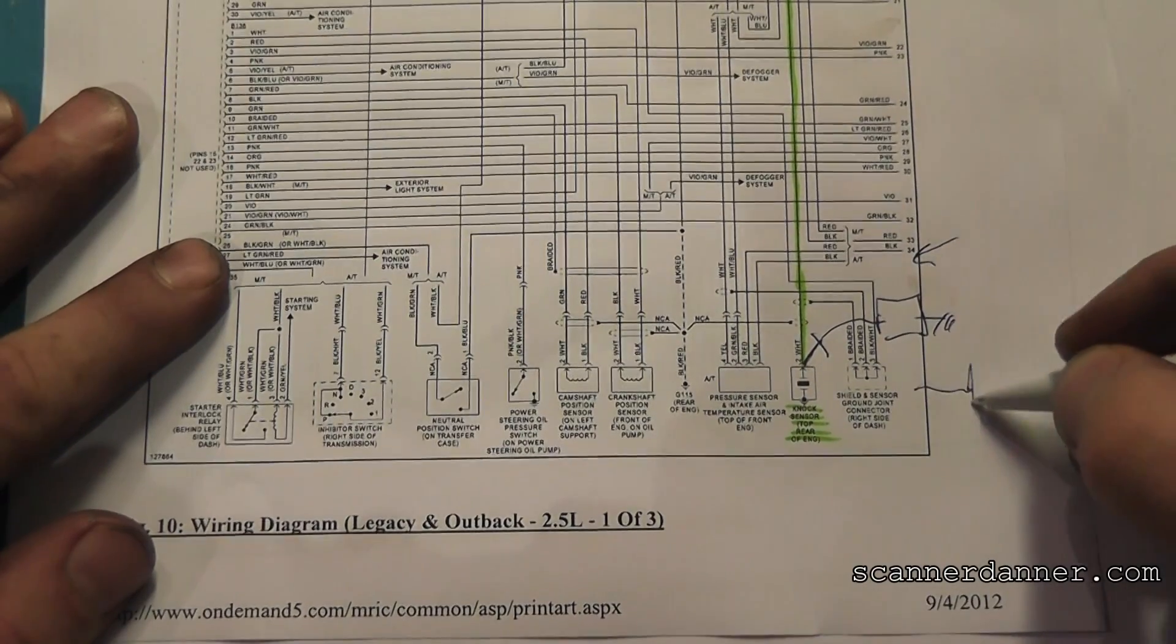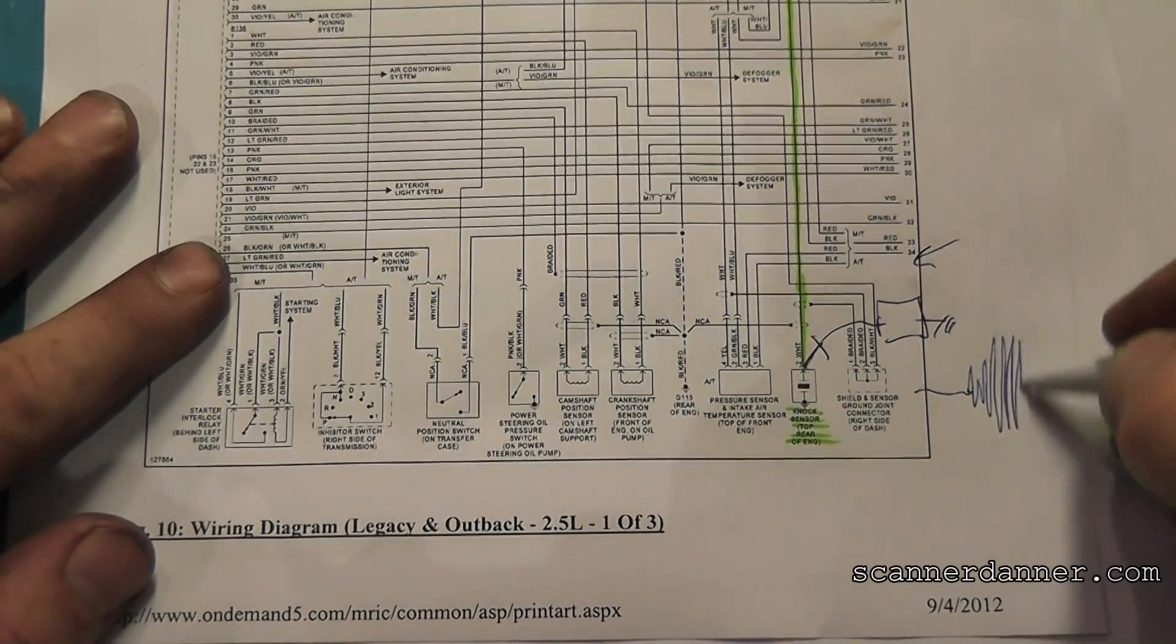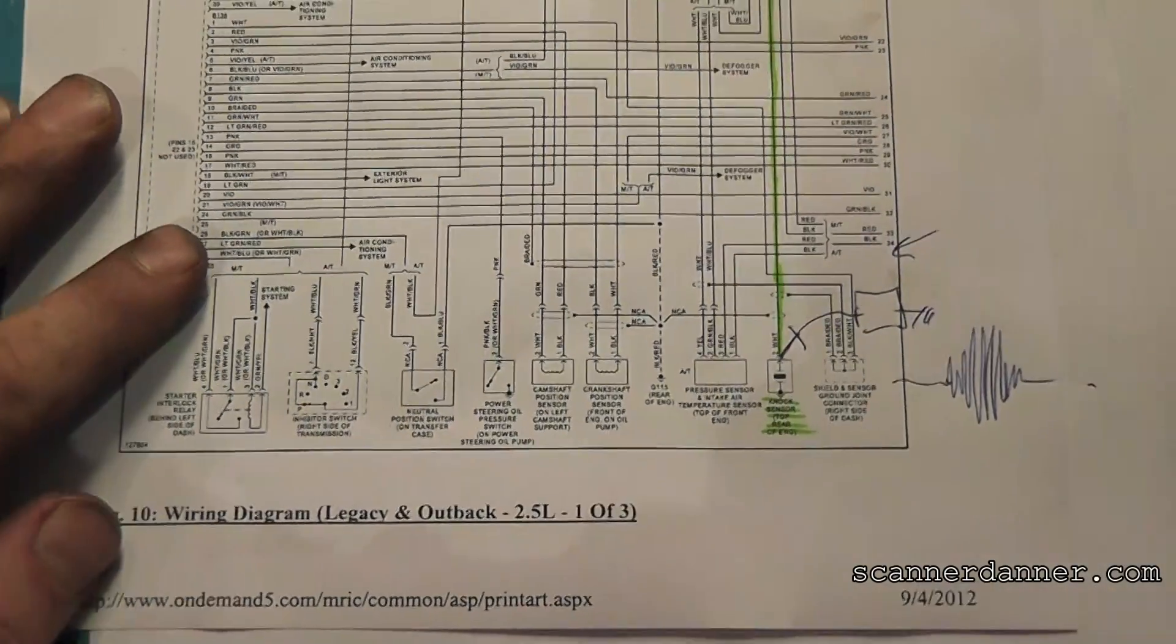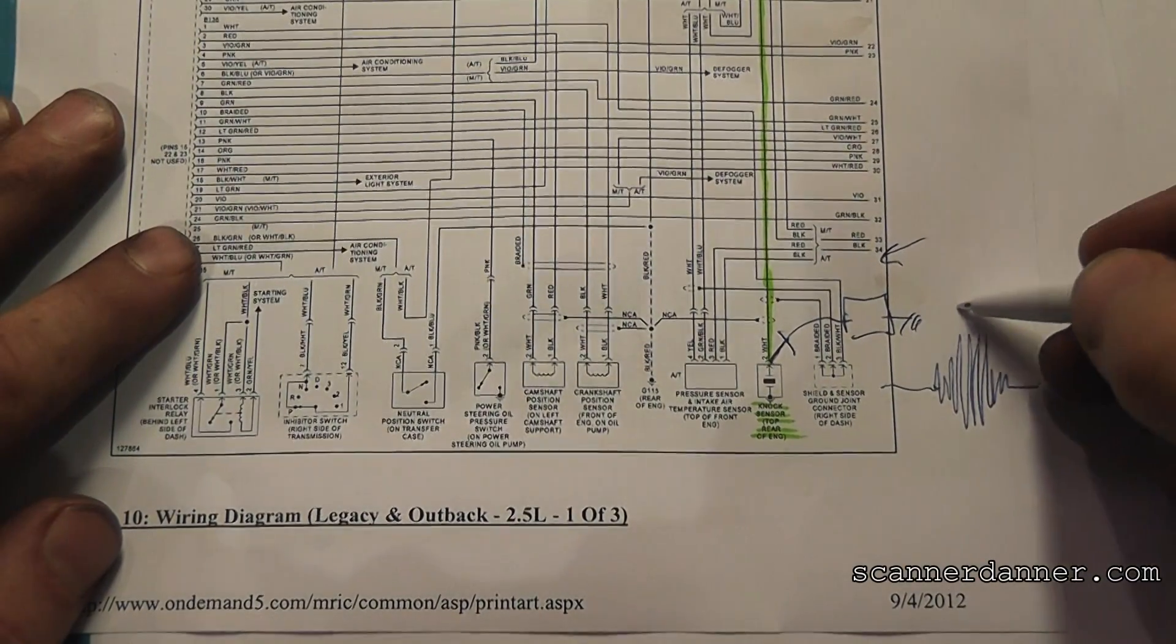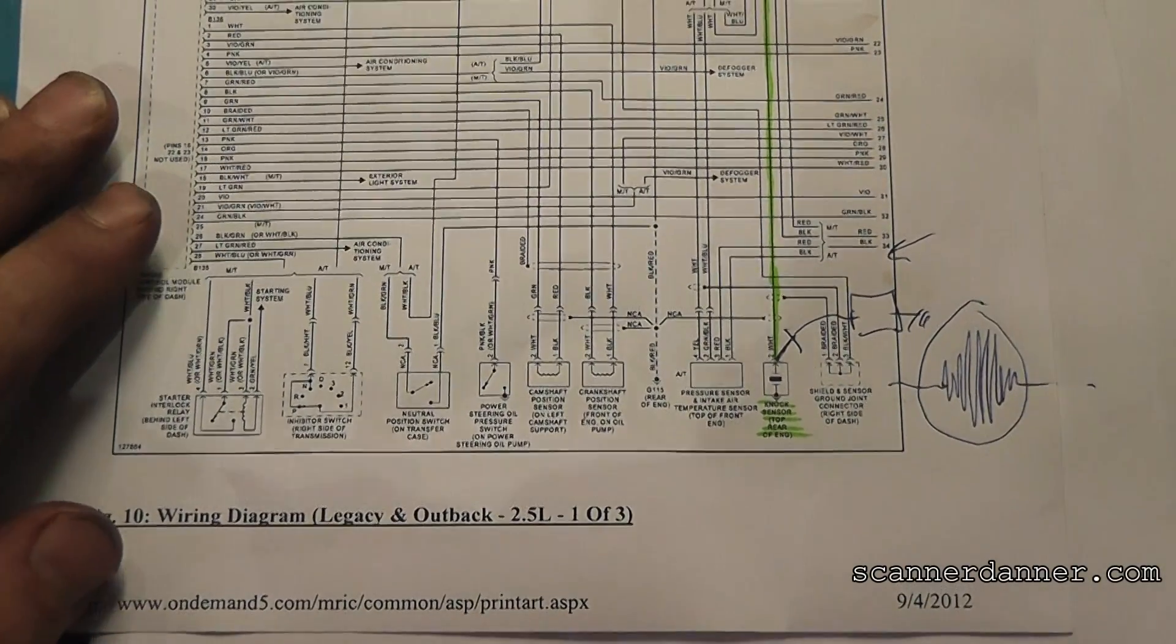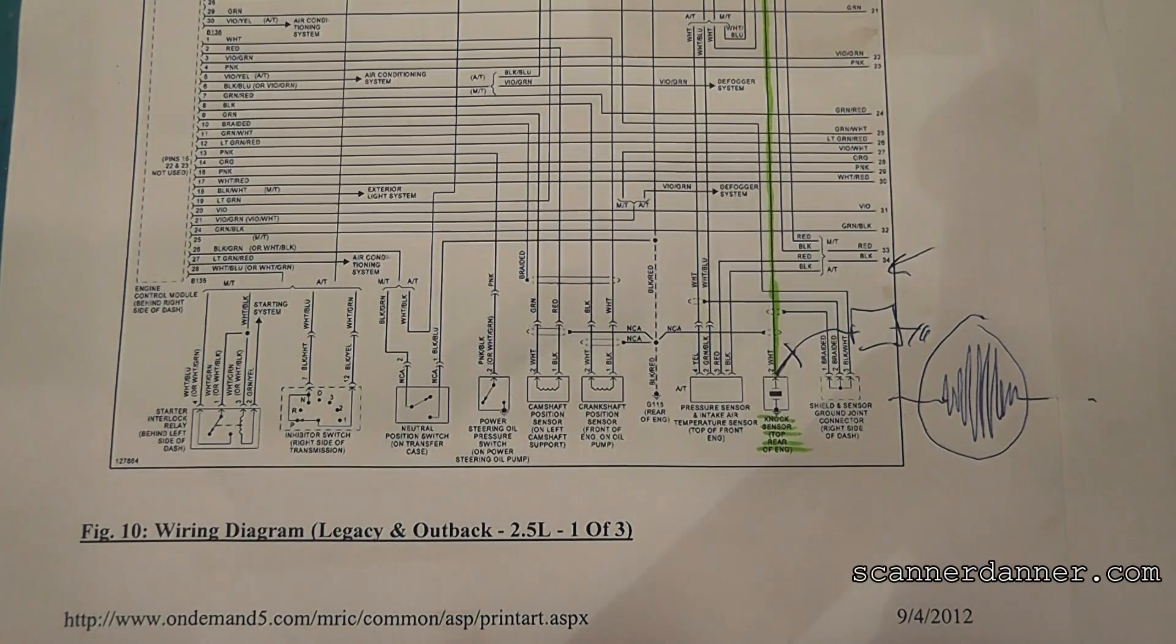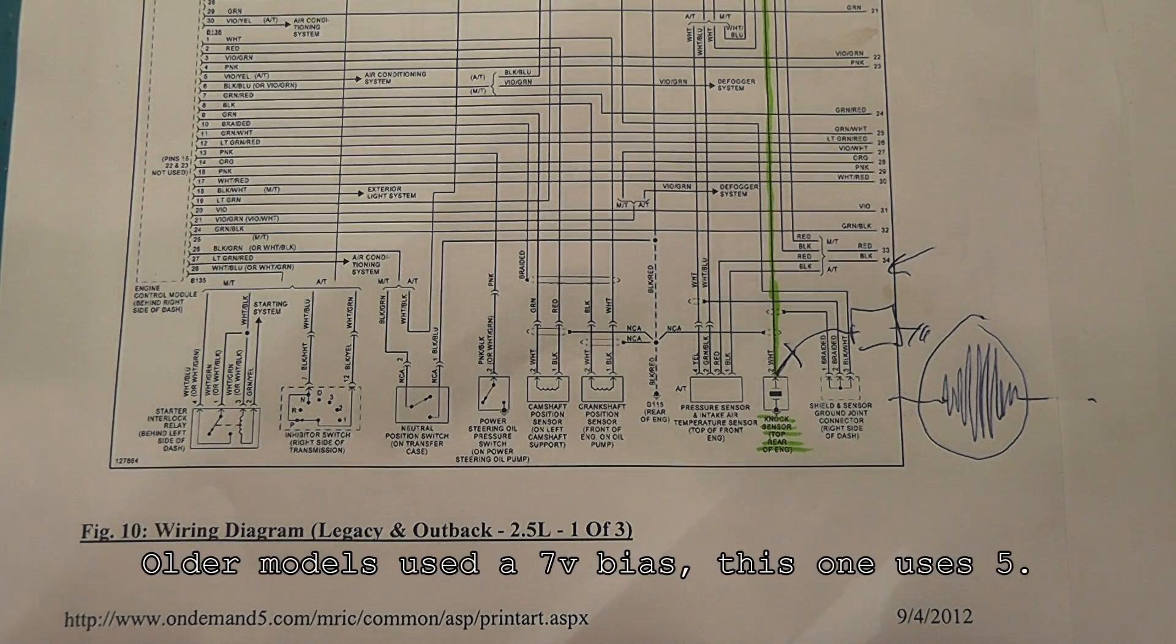Zoomed out, it would be something like this. So as you knock, as you hit on the block, you would see an AC voltage on here. We're going to do something a little bit different with this first. And this system, I believe, uses a 7-volt bias circuit on the knock sensor, and we're going to do some checks at the sensor itself, see what we have, and then I'll plug the theory in behind it.